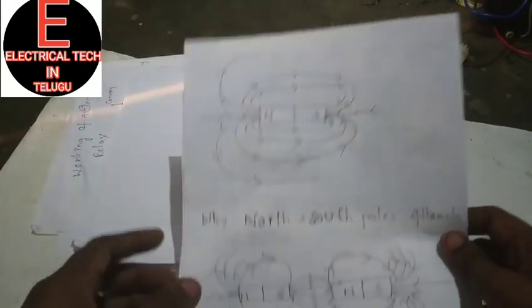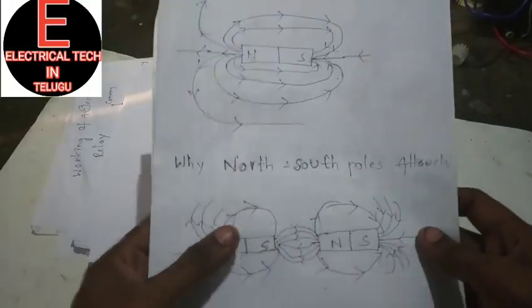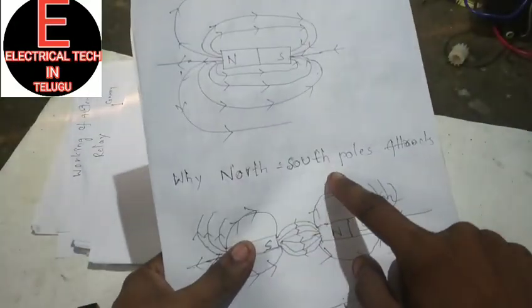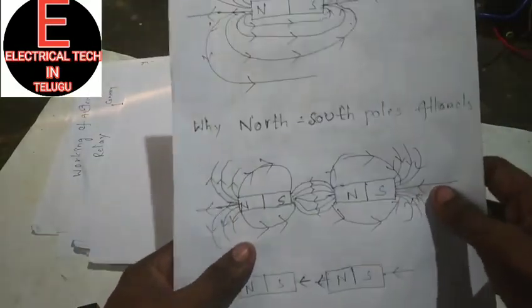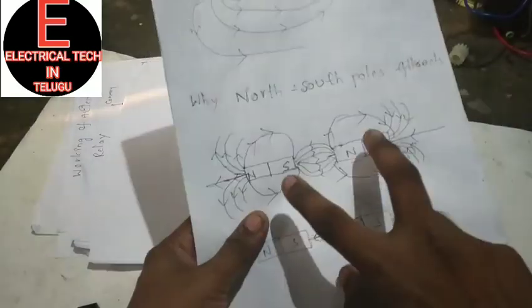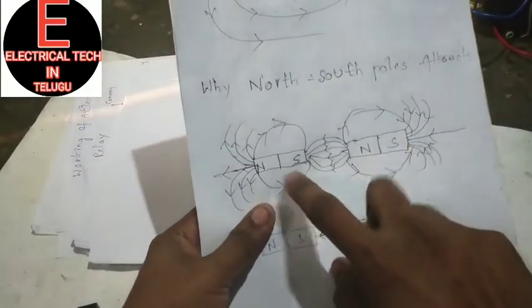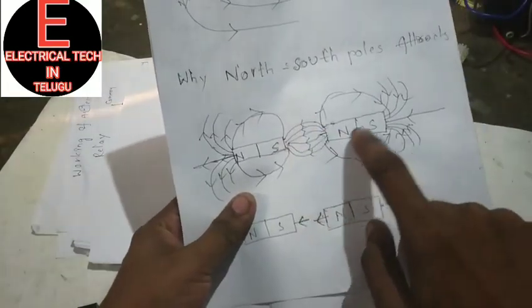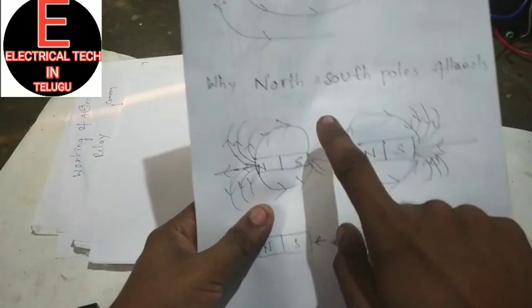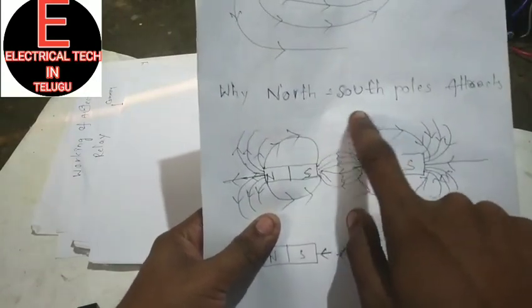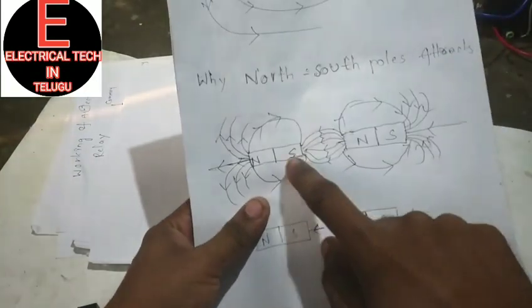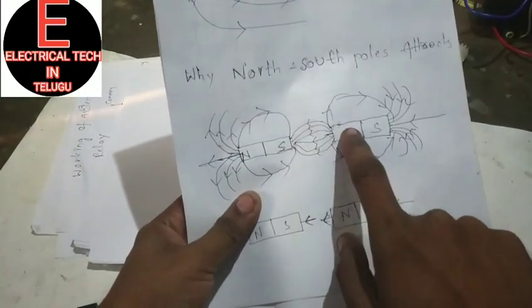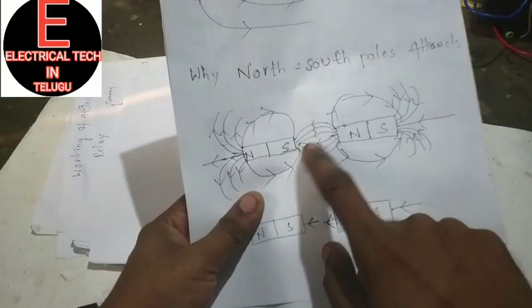Now, if we consider two magnets — north pole, south pole, north pole, south pole — unlike poles attract. North pole to south pole: this is the attraction.